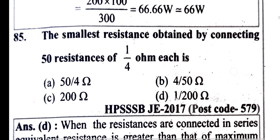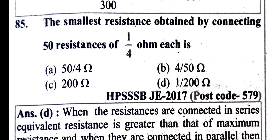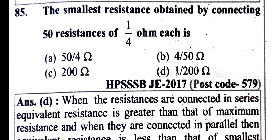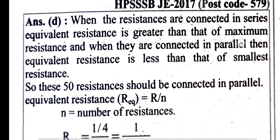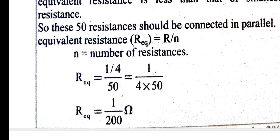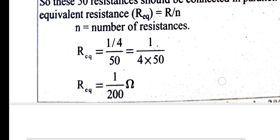The smallest resistance obtained by connecting 50 resistors of 1/4 ohm each: when connected in parallel, the equivalent resistance is less than the smallest individual resistance. The equivalent resistance for N resistors in parallel equals R divided by N. So 50 resistors of 1/4 ohm in parallel gives 1/200 ohm as the answer.